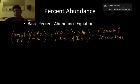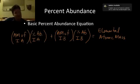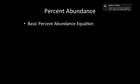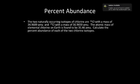Whenever I ask you to do problems like that, I'm going to give you the variables that you need and leave one variable for you to find. Here's our first example: two naturally occurring isotopes of chlorine are chlorine-35 with a mass of 34.9689, and chlorine-37 with a mass of 36.9659. The atomic mass of elemental chlorine on Earth is found to be 35.46. Calculate the percent abundance.